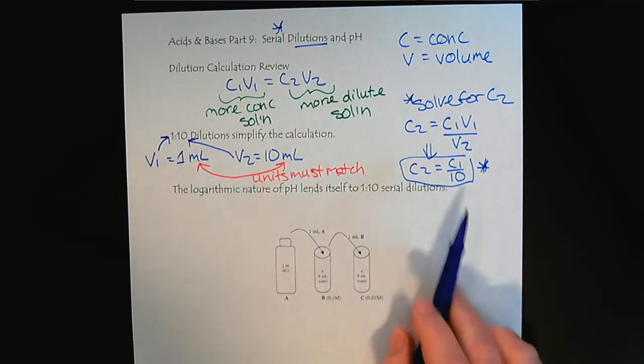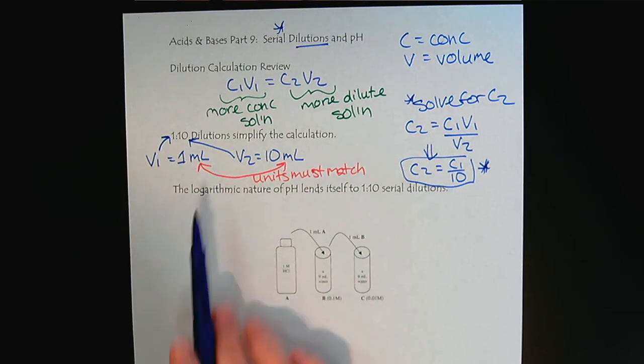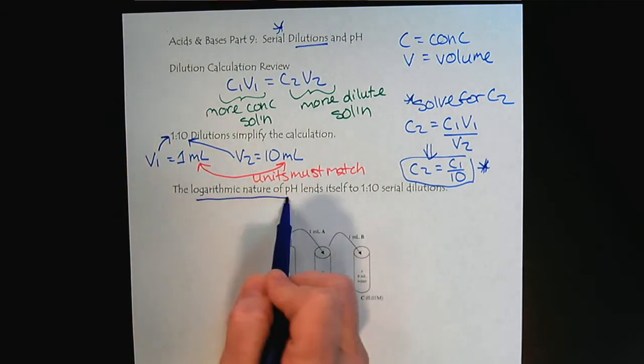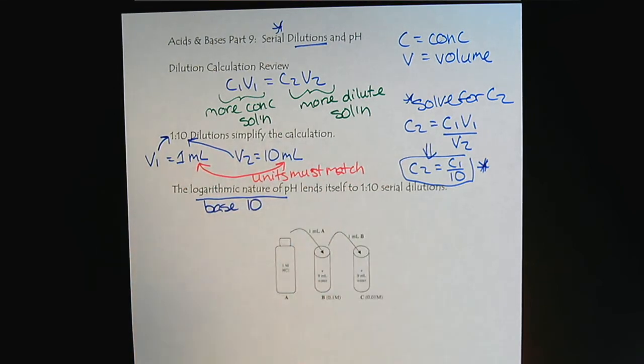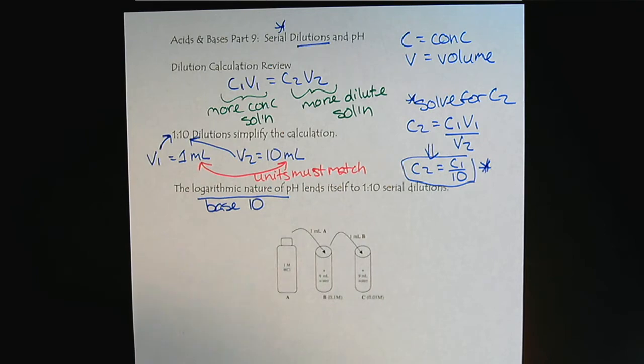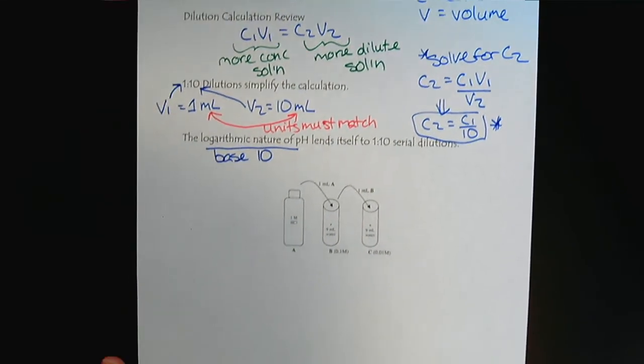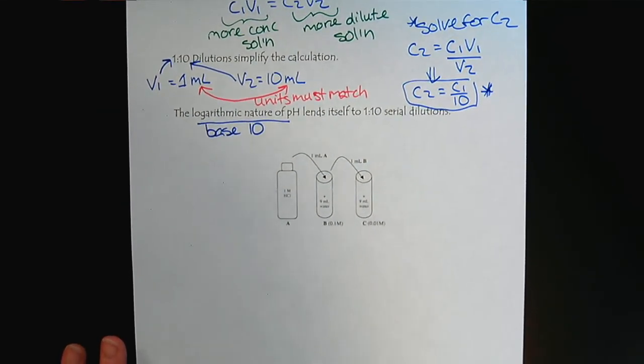And the reason why we like to do 1 to 10s is because of the logarithmic nature of pH, which is in base 10. So we have a beautiful complement. Let's go through the serial dilution process.